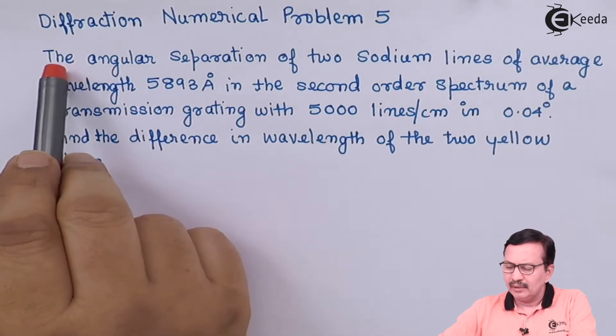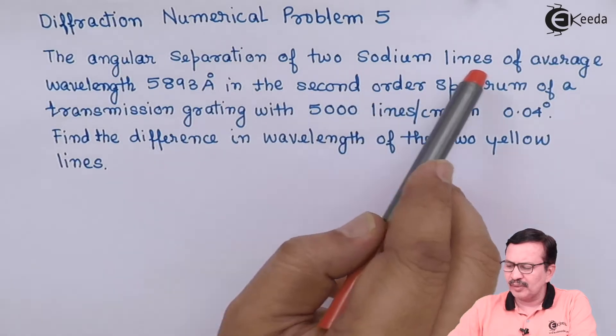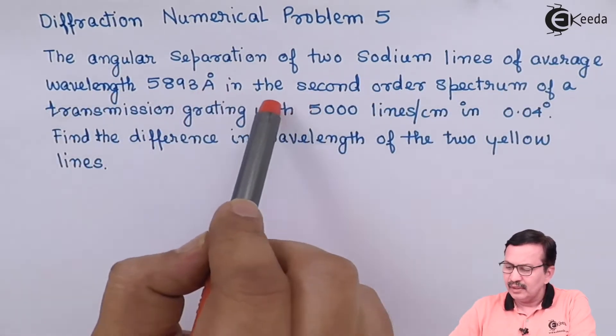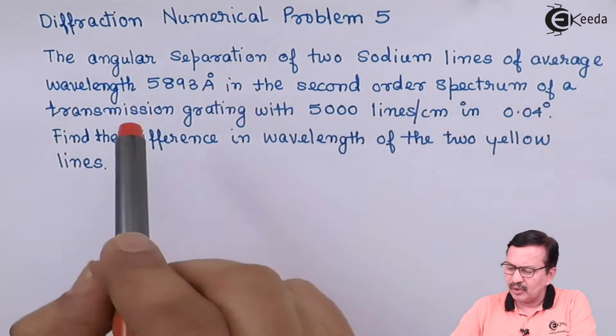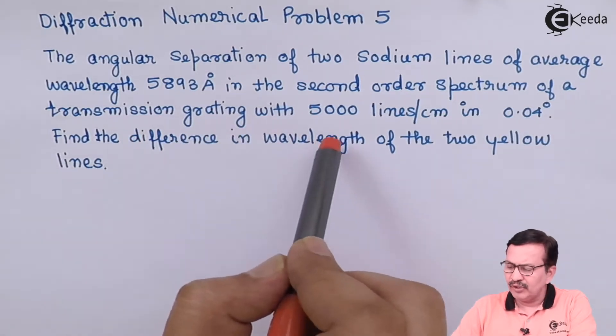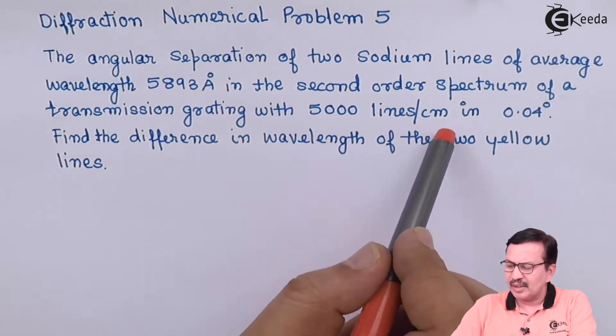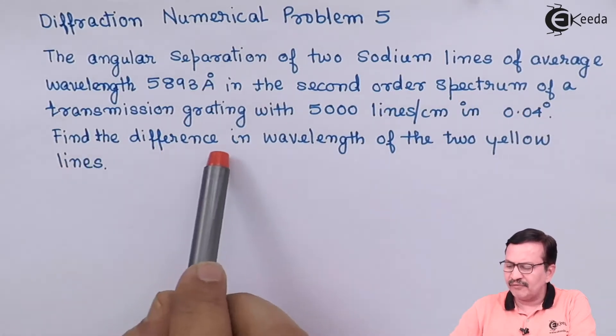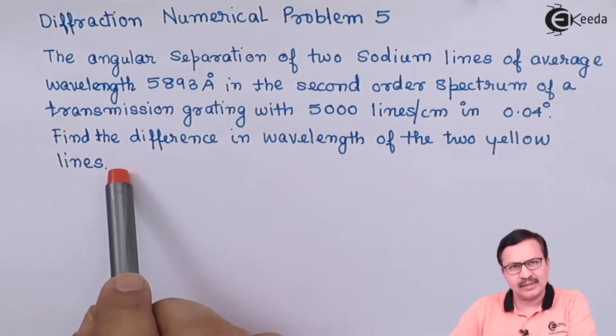Here is the problem. The angular separation of two sodium lines of average wavelength 5893 angstroms in the second order spectrum of a transmission grating with 5000 lines per centimeter is 0.04 degrees. Find the difference in wavelength of the two yellow lines.